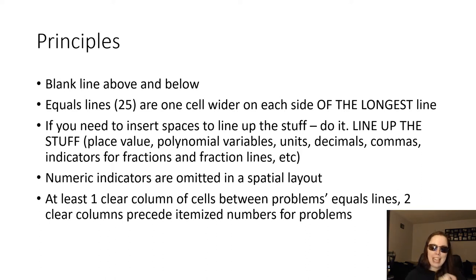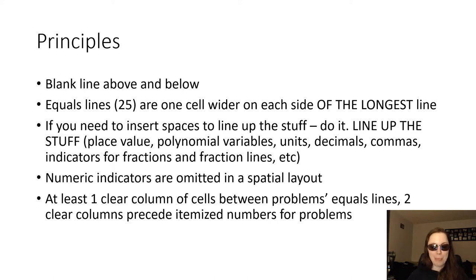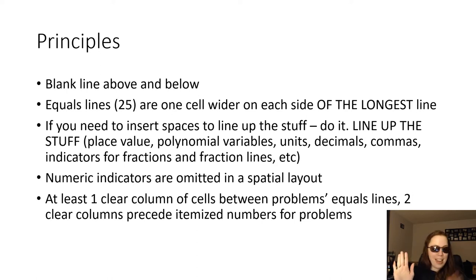The equals lines or separator lines are made with dots 2-5, and they're always one cell wider on each side of the longest line of the problem. That's kind of a universal thing — we're going to put our equals line under it, it's going to start one cell before the widest line and end one cell after.